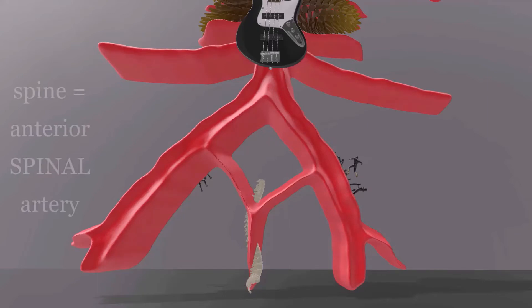But this spine reminds us of the spinal artery, and specifically the anterior spinal artery. This is the anterior spinal artery right off the vertebral artery.